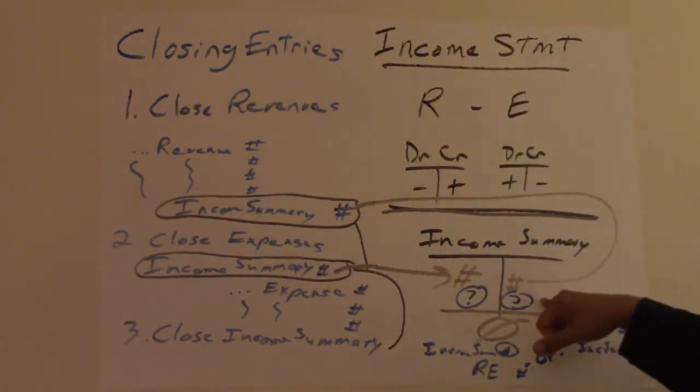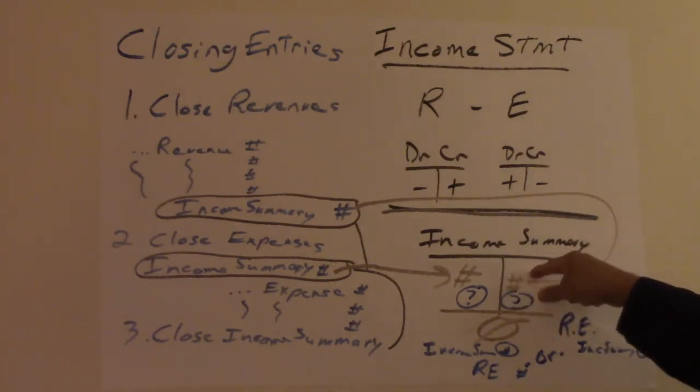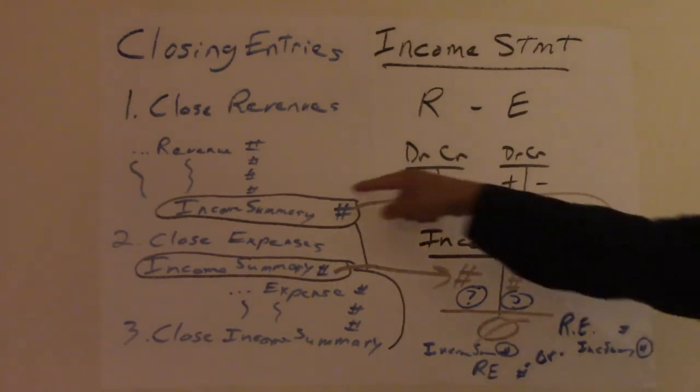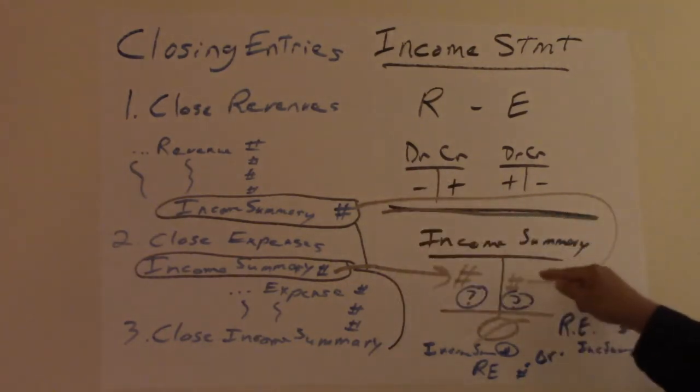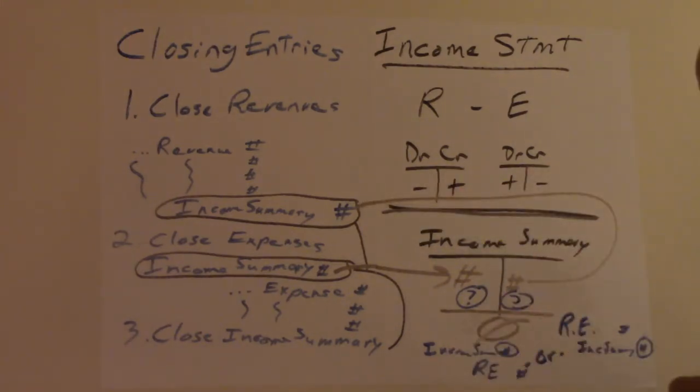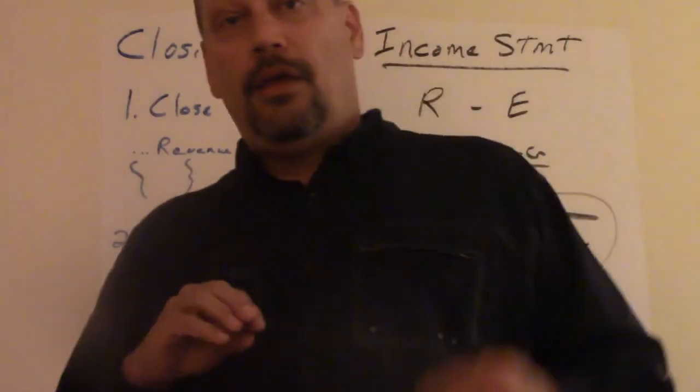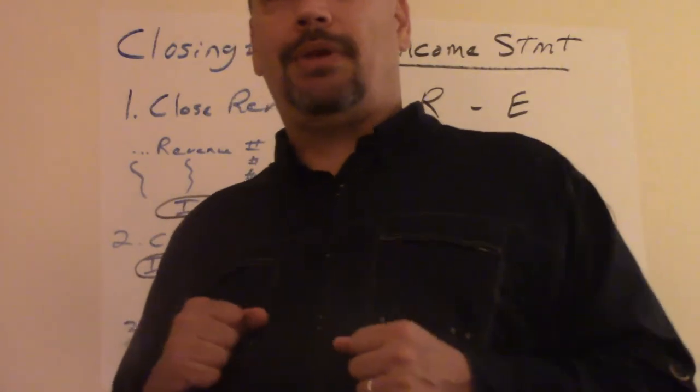So if you need to credit income summary, you'd debit retained earnings and credit income summary for whatever number you need to make it zero. If this one's bigger, which means you had more revenue, which is a good thing than expenses. If the revenue is bigger, which closeout comes to here as you see, you then would debit income summary and you credit retained earnings. That credit to retained earnings will affect your retained earnings number that you do in the statement of retained earnings.